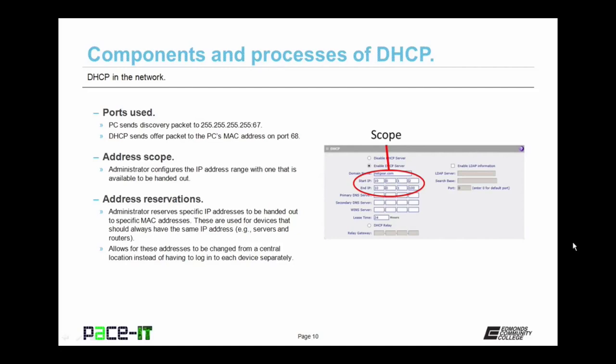Then there's the address scope — the IP address range that the administrator configures on the DHCP server, which is the range of addresses the DHCP server can hand out to individual nodes. There are also address reservations — administrator-configured reserved IP addresses. The administrator reserves specific IP addresses to be handed out to specific MAC addresses, used for devices that should always have the same IP address, such as servers and routers.